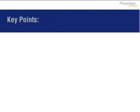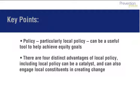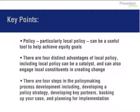To recap, let's review the key points of this module. Policy, particularly local policy, can be a useful tool to help achieve equity goals. We emphasized four distinct advantages of local policy, including that local policy can be a catalyst and can also engage local constituents in creating change. Finally, we covered four major steps in the policymaking process: selecting a policy priority, developing a strong base of support, backing up your case, and planning for implementation and evaluation. A full paper on health and health equity — the value of local policy — provides a deeper look at the issues covered here. Please continue on to the next module when you are ready.